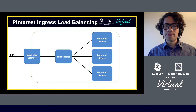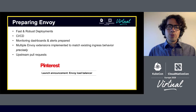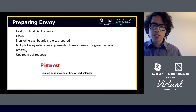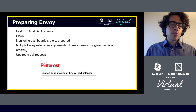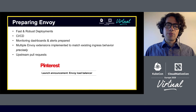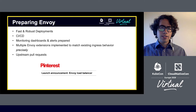To get ready for Envoy, we did a lot of operational homework to make sure that we had fast and reliable deployments, good integration with our CI/CD and monitoring and alerts. We wrote plenty of runbooks around Envoy to make sure that we were prepared for when things could go wrong. And we wrote numerous extensions both internally and open source to make Envoy feature complete and provide exact parity with our existing proxy. Our objective was to have such close feature completion that we could essentially swap the load balancers and nobody would notice.